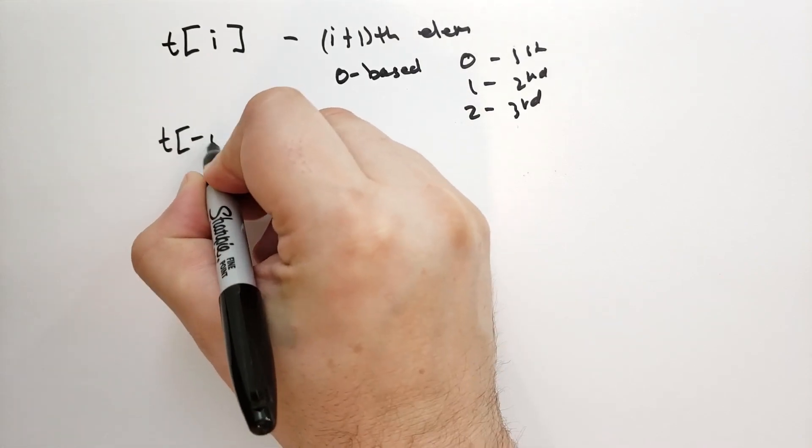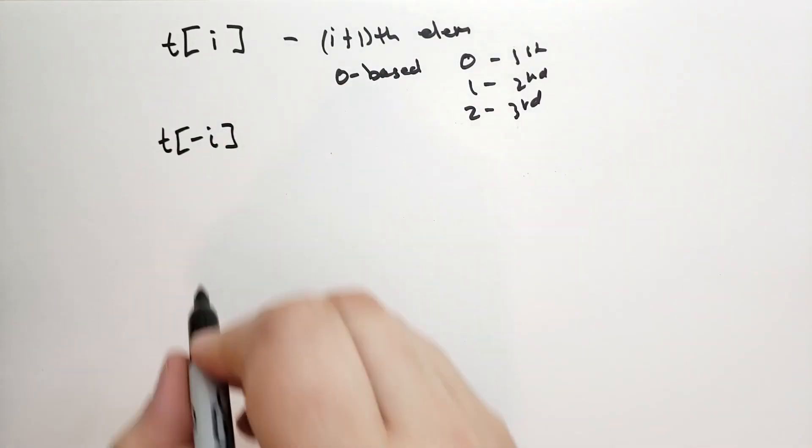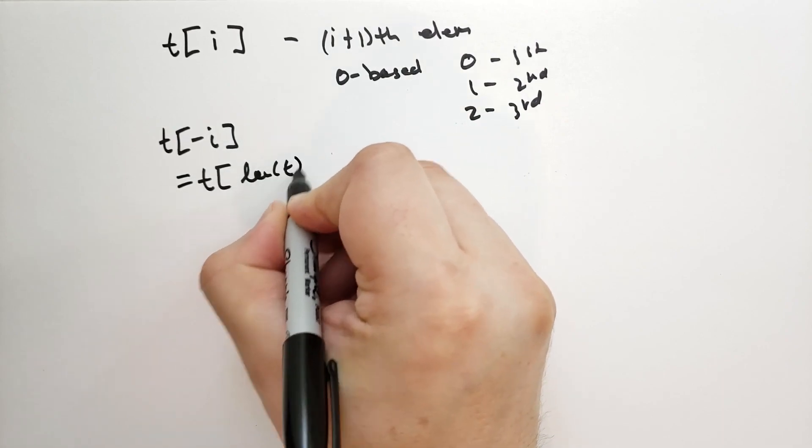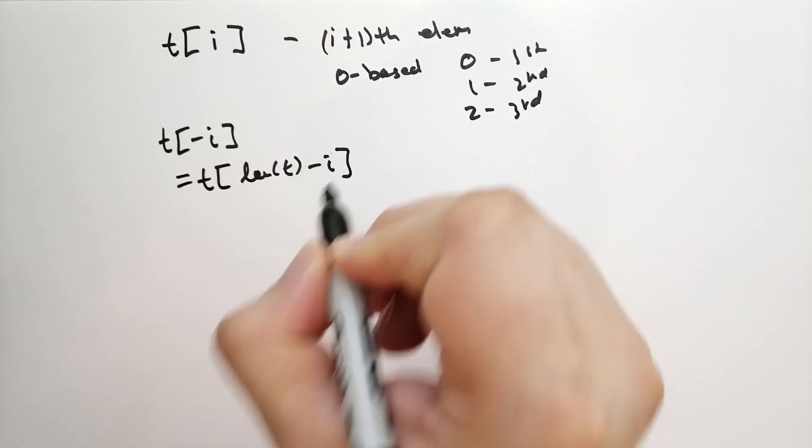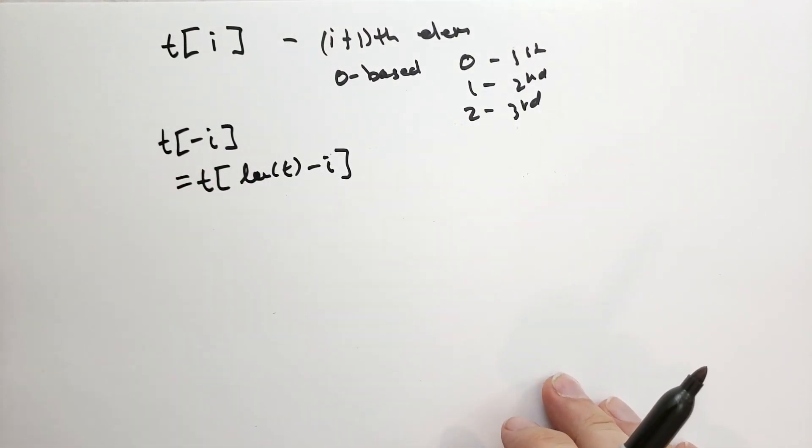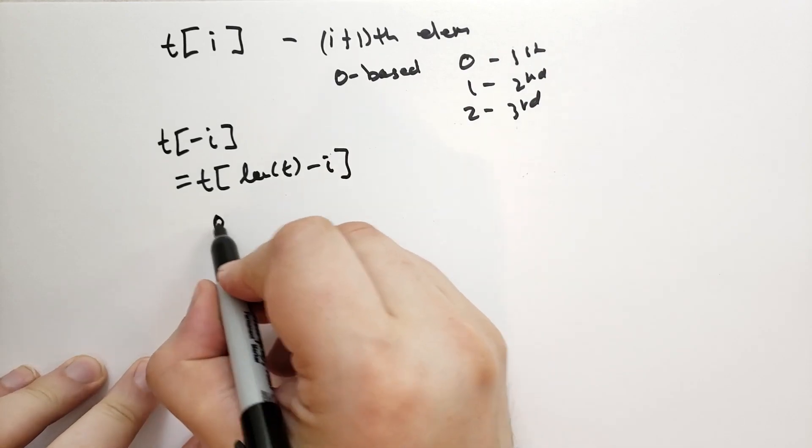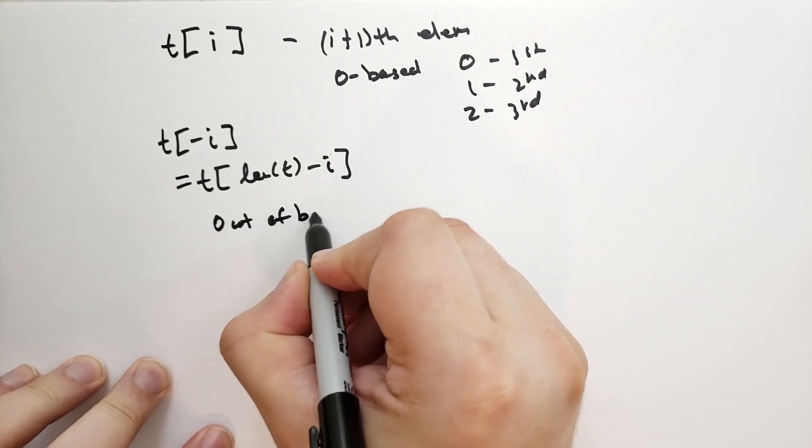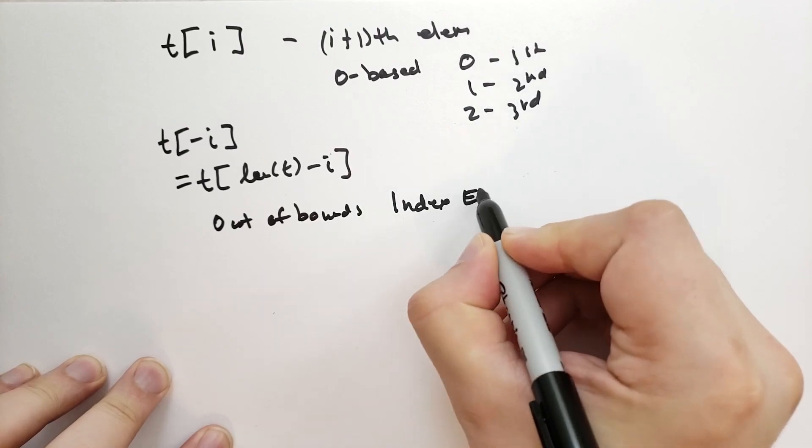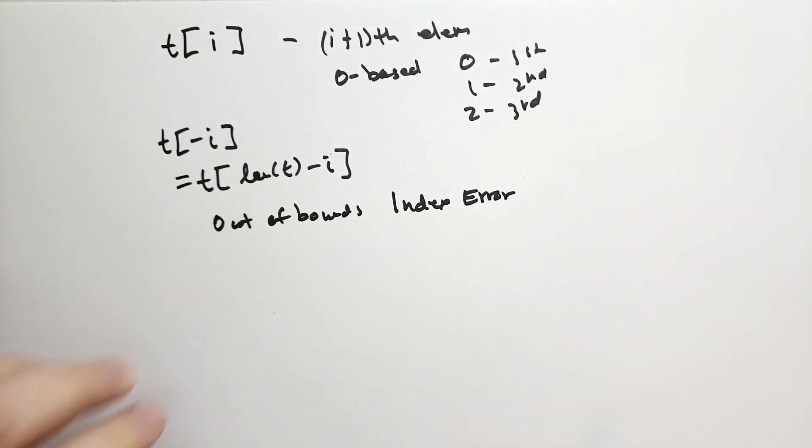We can also use negative indexes. So if I take negative i, where i is an integer, this is the same as taking t times the length of the t and subtracting i. So you can go backwards if you want to. Note that if we go out of bounds, it will give us the index error, the same error that we see when we go out of bounds on strings.